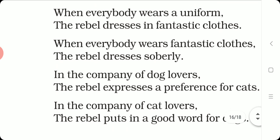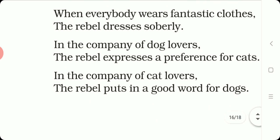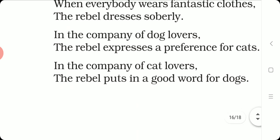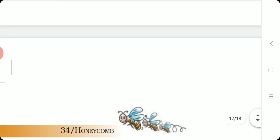In the company of dog lovers, the rebel expresses a preference for cats. So, in the company of dog lovers, when everybody is talking about dogs, he will talk about cats. In the company of cat lovers, the rebel puts in a good word for dogs. So, when everybody in a particular company is talking about how fond they are of cats, he puts in a good word for dogs — he will start talking about the dogs.